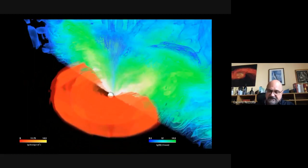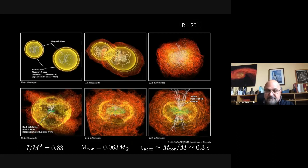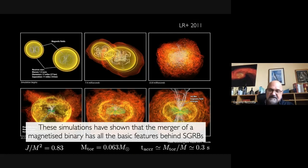This is where the simulation ends. As the black hole forms, there is still complicated field topology. But then the black hole — a rotating black hole — sets things in order. If you wait long enough, you produce a jet-like structure. The typical energetics: you produce a black hole with spin 0.8, with a mass of about six solar masses, with about six percent of a solar mass in the torus. If you calculate how long this torus will resist, it's about 0.3 seconds. So this is not a gamma-ray burst simulation in any respect, but it's telling you that if you collide two neutron stars with a magnetic field, you will naturally produce strong magnetic fields and a jet structure.